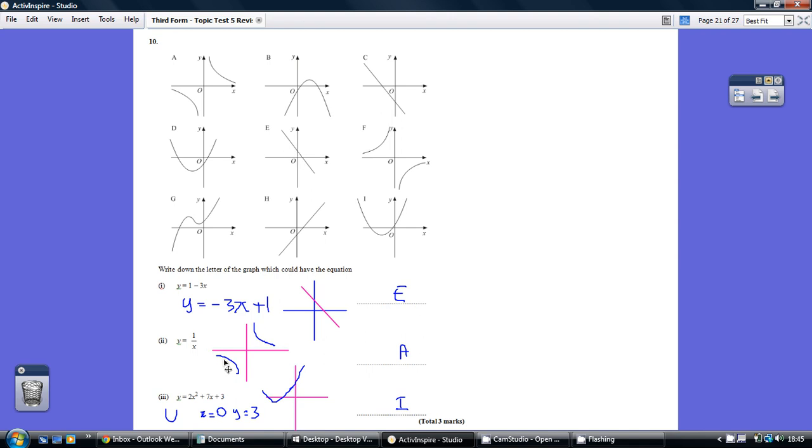The reciprocal graph always looks like this. And this is a smiley face graph, plotting, cutting the y-axis at plus 3. It's a smiley face, y-axis above the line, so that's got to be I.